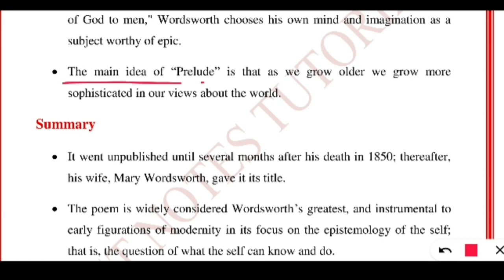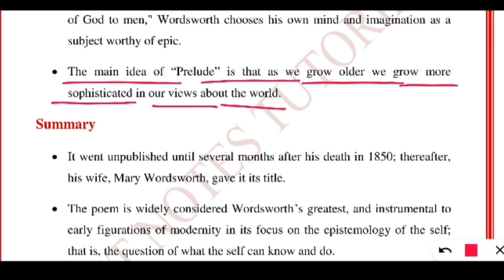The main idea of The Prelude is that as we grow older, we grow more sophisticated in our views about the world. During childhood we are connected with materialistic things and don't emphasize the role of nature. As we grow, our materialistic attachment — phones, clothes, eatables — gives happiness, but when grown up, people want peace of mind, tranquility, no hustle and bustle. According to Wordsworth, peace and happiness are possible only through nature.